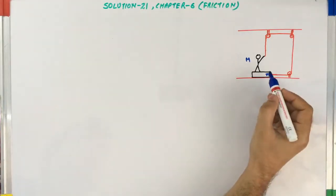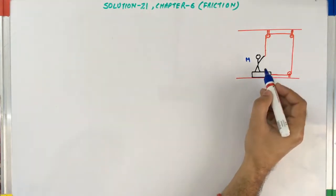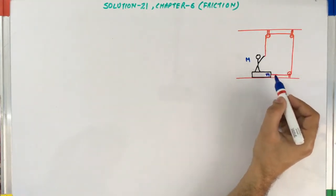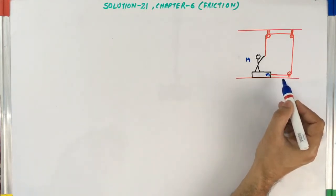So in this problem, this man is standing on this block. If this man will pull this rope in the downward direction, that means this block will try to move in the right hand direction.